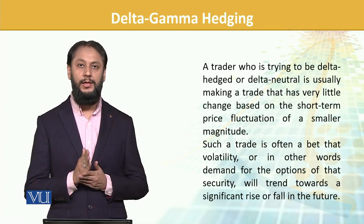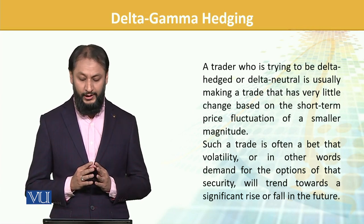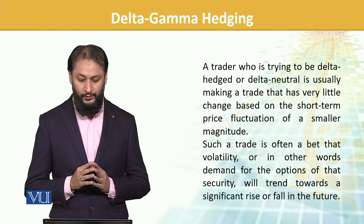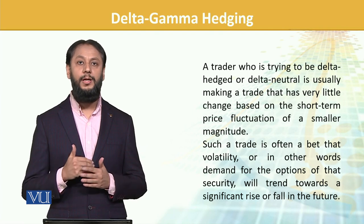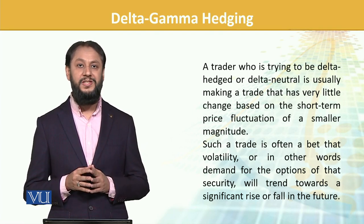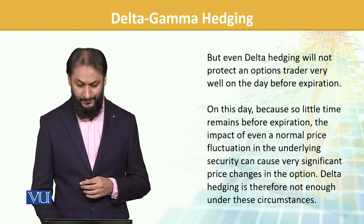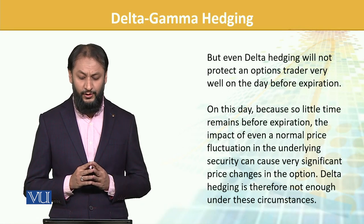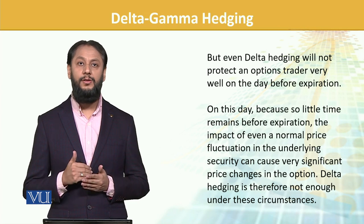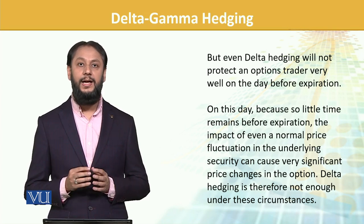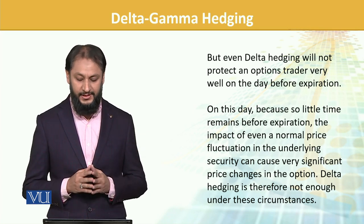Small changes are captured by being delta-neutral — that is fine. Such a trade is often a bet that volatility, or in other words demand for options, will tend towards a significant rise in the future. It is not capturing the whole big significant change. But even delta hedging will not protect an option trader very well on the day of expiration.